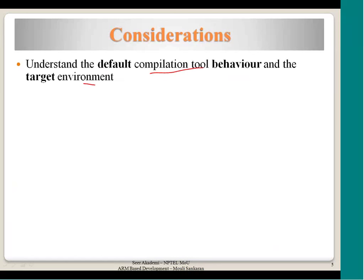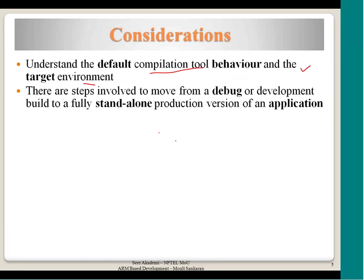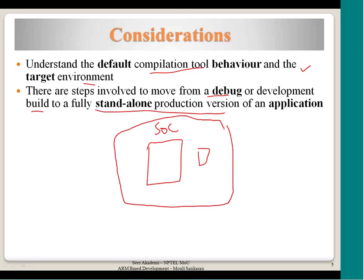Sometimes the compiler itself assumes something — if you do not give specific hardware details, the compiler will assume something and proceed with some output. There are steps involved to move from a debug or development build to a fully standalone production version of an application. When developing any application using a processor-based solution, we have both a development system and a target system.